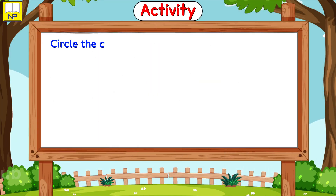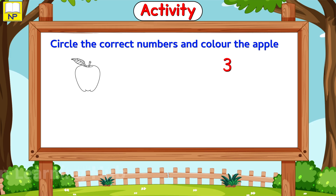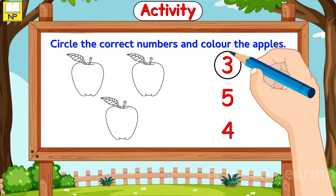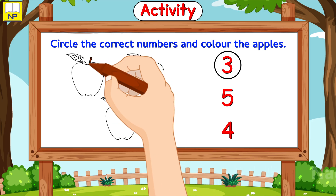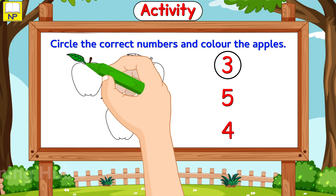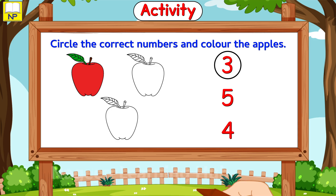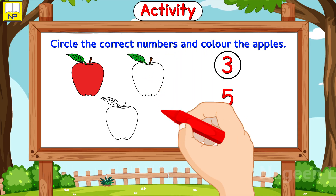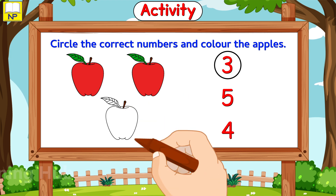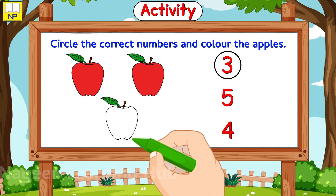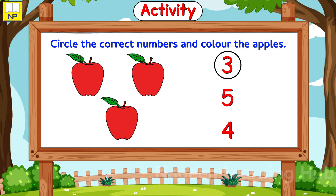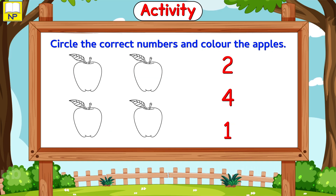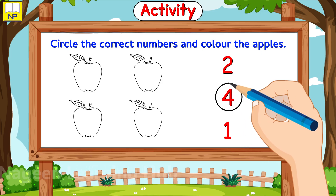Activity: circle the correct numbers and color the apples. Three apples — the correct answer is three. Four apples — the correct answer is four apples.